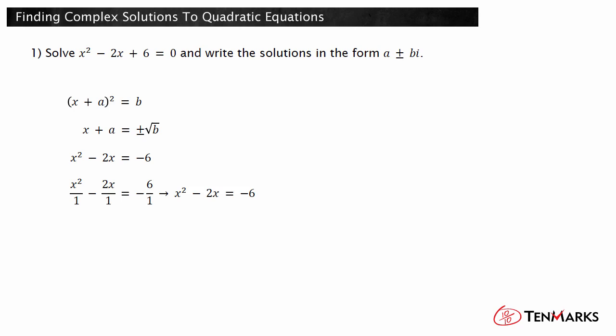Now consider the coefficient of the first degree term. Find half of this coefficient and then square that value. The result is 1. The next step is to add this value to both sides of the equation.